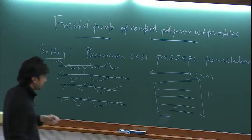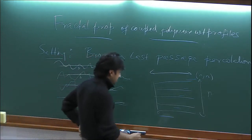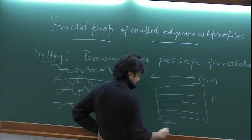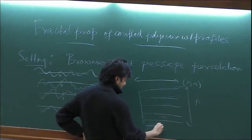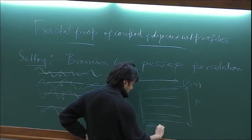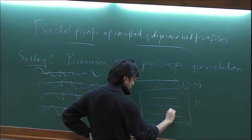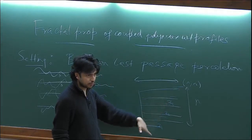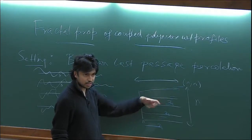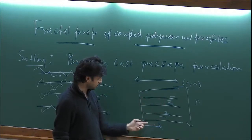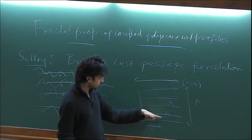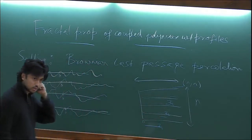These paths are indexed by points Z_i. A path is uniquely determined by the jump points Z_1, Z_2, Z_3. If you give an increasing sequence of numbers Z_i, that determines what the path is. Z_1 would be the time you spend on the first line, then Z_1 to Z_2 the time on the second line, and so on.